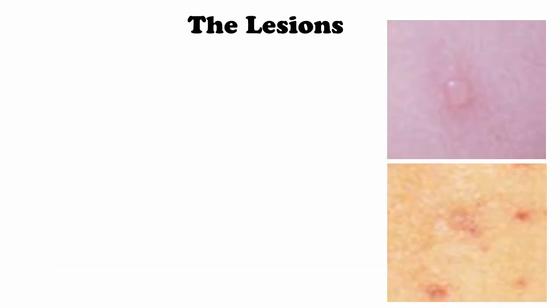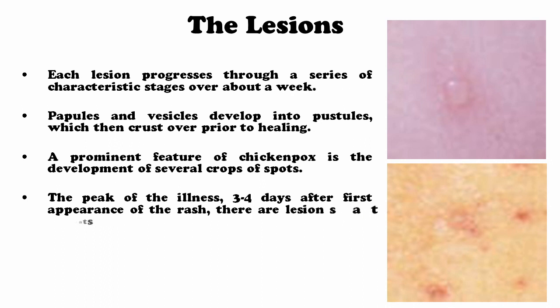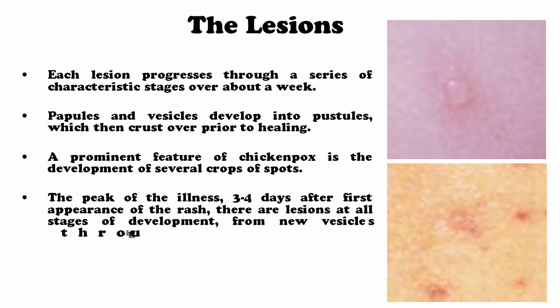The lesions — as you can visualize — show vesicles on the skin which are filled with fluids that are highly contagious and contain numerous viruses. Each lesion progresses through a series of characteristic stages: macules, papules and vesicles develop into pustules which then crust over prior to healing. A prominent feature of chickenpox is the development of several crops of spots, with the peak three to four days after first appearance of the rash, with lesions at all stages of development simultaneously.